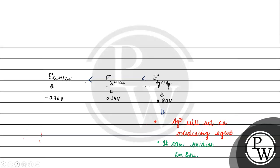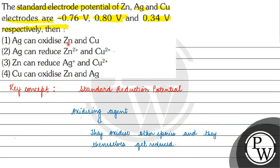Looking at the options: Option one says Silver can oxidize Zinc and Copper — this is wrong because it is Ag+ (Silver ion) not Silver metal that acts as oxidizing agent. Option two says Silver can reduce Zinc 2+ and Copper 2+ — this is also incorrect, because Silver cannot reduce Zinc 2+ and Copper 2+. Option four says Copper can oxidize Zinc and Silver — this is also wrong, because Copper's reduction potential is less than Silver's, so Copper cannot oxidize Silver.